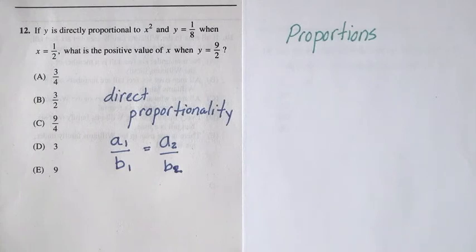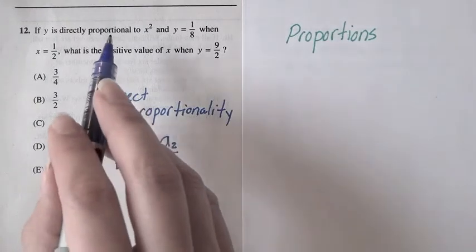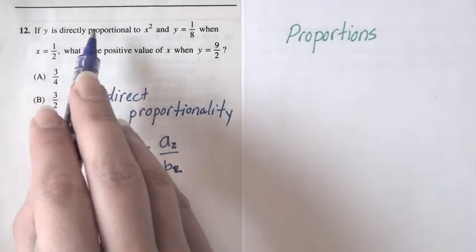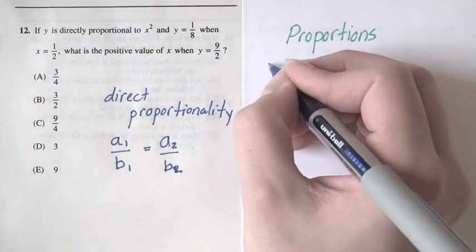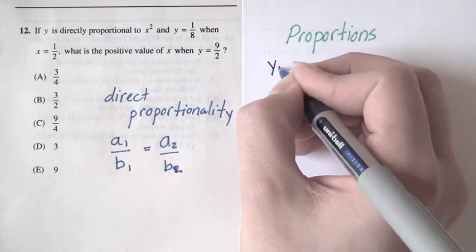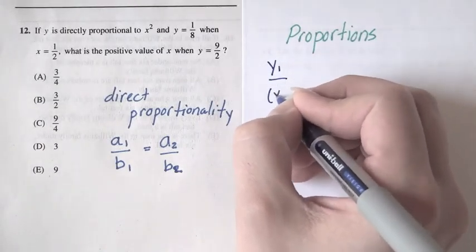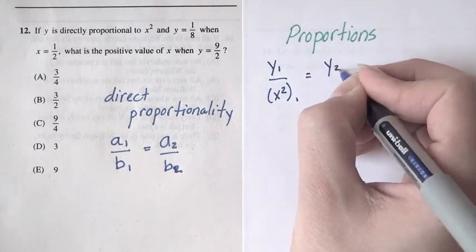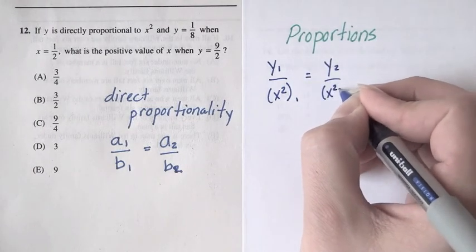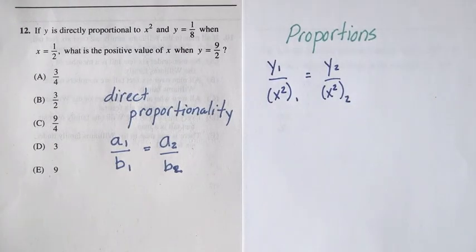Now that we know the relationship, let's get it set up. In this case, we have y directly proportional to x squared. That means, according to this rule, that y over x squared is going to be equal to y over x squared for any pair of y's and x's.